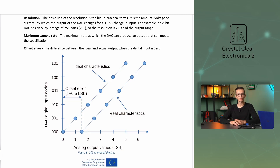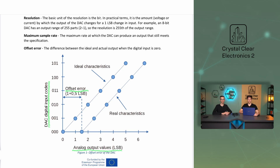The fourth is the offset error. The figure on the screen illustrates the offset error. The vertical axis shows the digital input code of the DAC represented on 3 bits, and the horizontal axis shows the analog output value. The offset error is the difference between the ideal and actual output when the digital input is 0. It can be clearly seen that the real output signal deviates from the ideal line by 1.5 LSB for input code 0, 0, 0.